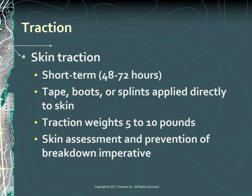Skin traction is generally used for short-term treatment—48 to 72 hours—until skeletal traction or surgery is possible. Tape, boots, or splints are applied directly to the skin to maintain alignment, primarily to help diminish muscle spasms in the injured extremity. The traction weights are usually limited to 5 to 10 pounds. A Buck's traction boot is a type of skin traction used preoperatively for a patient with hip fracture to reduce muscle spasms. In skin traction, regular assessment of the skin is a priority because pressure points and skin breakdown may develop quickly. Assess key pressure points every 2 to 4 hours.